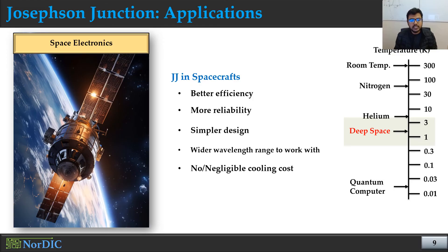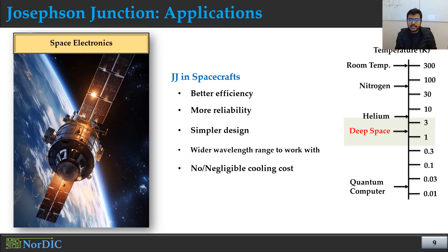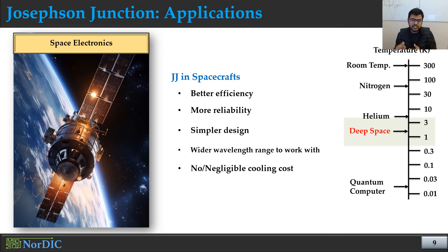Another exciting application is aerospace, because in deep space there is a very low temperature which is suitable for the operation of Josephson Junction and other superconducting devices. You can use this freely available low temperature for superconducting circuits and systems in spacecraft. It has been reported that using superconducting circuits in spacecraft design instead of CMOS circuits — which are typically for room temperature operation — provides better efficiency, more reliability, and improved design complexity for aerospace applications.